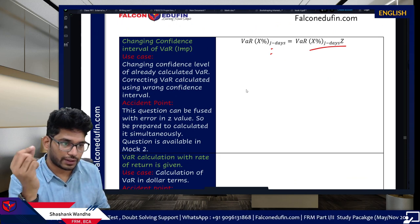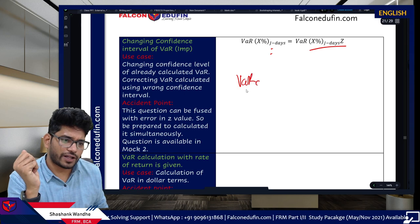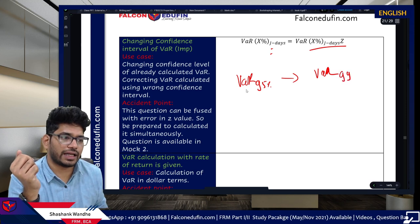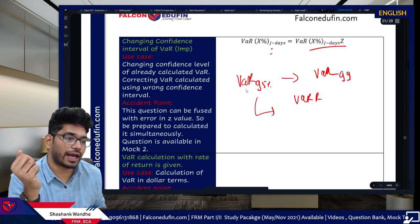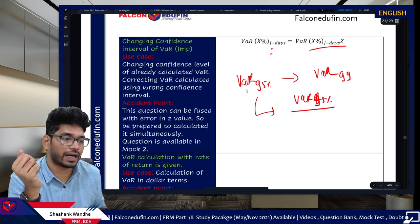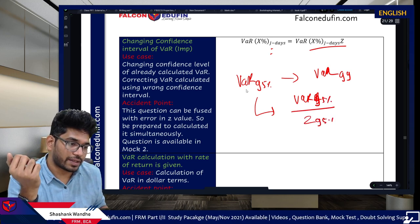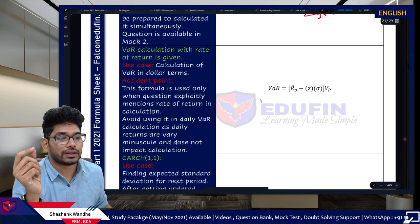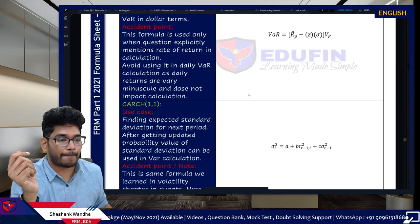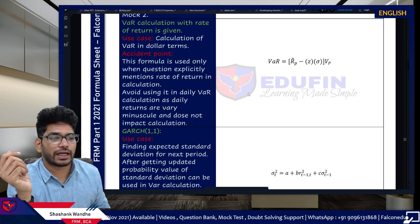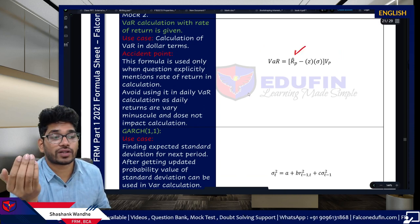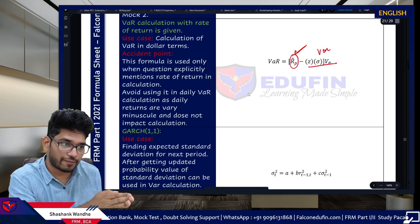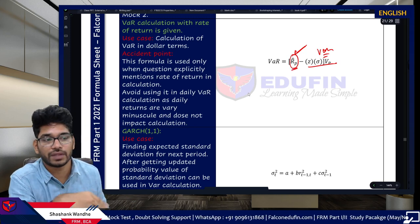For confidence level translation: if VaR is at 95% and you need 99%, divide VaR(95%) by Z(95%) then multiply by Z(99%). If return or interest rate is provided, reduce it from the portfolio return (RP) first, then apply the standard VaR formula. The remaining steps are the same as the standard VaR calculation.